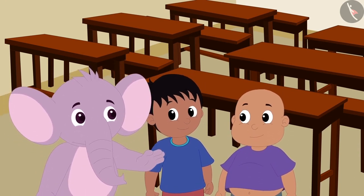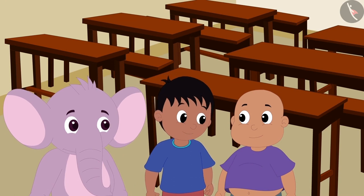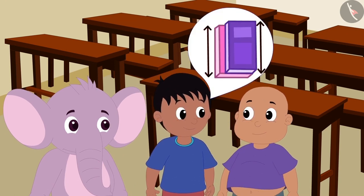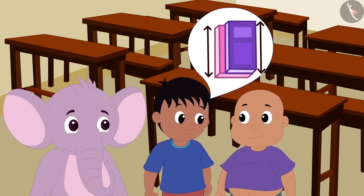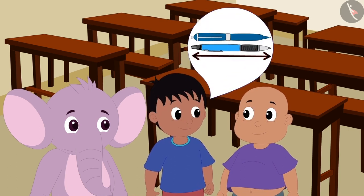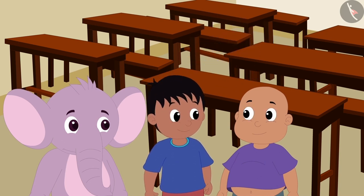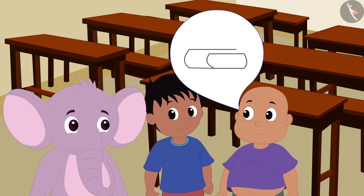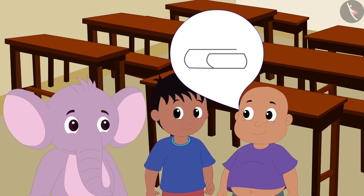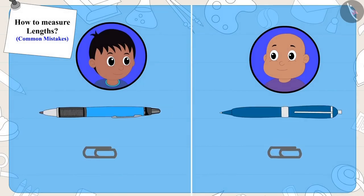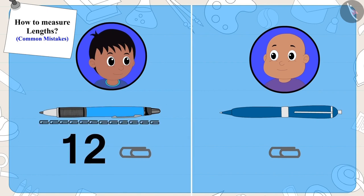Now Raju told Bablu that maybe their notebooks might be of the same length, but his pen is definitely longer than Bablu's. Bablu told Raju why can't they measure the length of the pen using a paper clip. Both of them took similar paper clips and measured their pens.